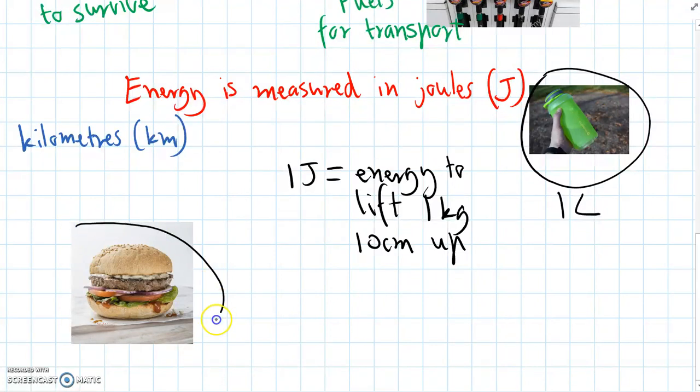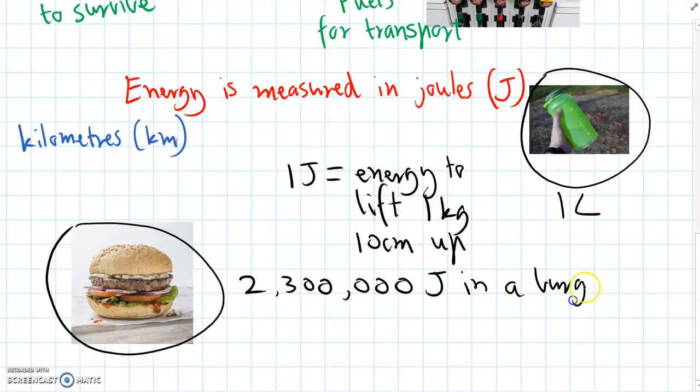But foods also contain energy, as I mentioned before, and they actually contain lots of energy. So in a burger here, an average burger contains about two million three hundred thousand joules in a burger. So when we eat food, we are getting lots of energy to power our bodies.